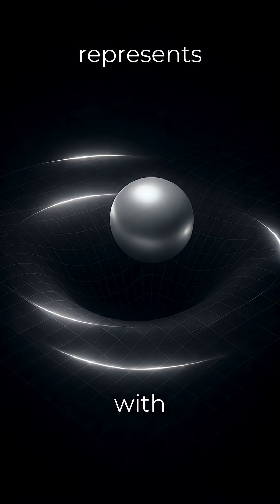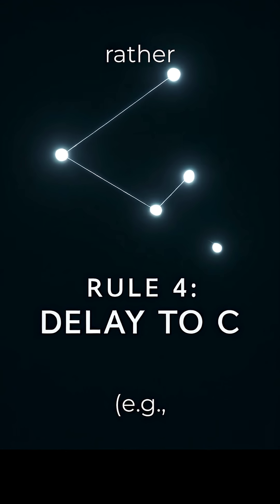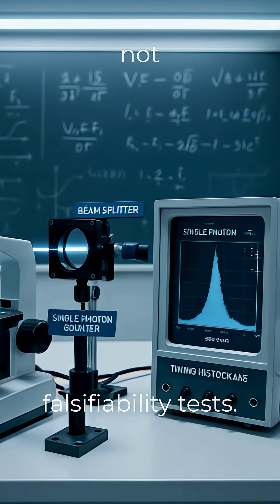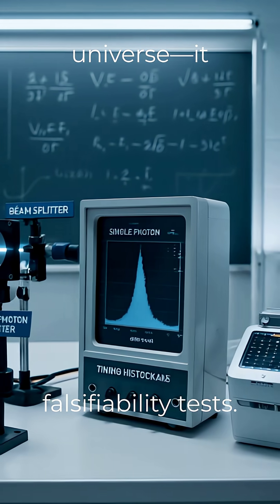The constant c thus represents a rendering delay rather than a voyage speed. Light does not traverse the universe, it resolves it.